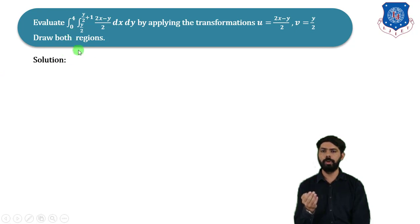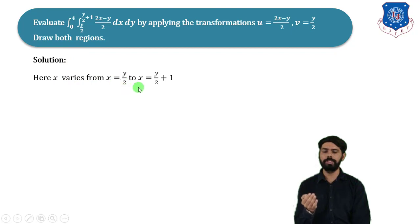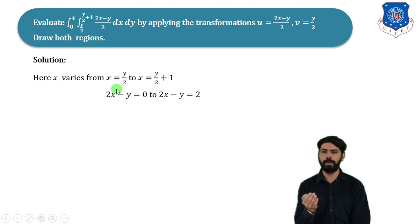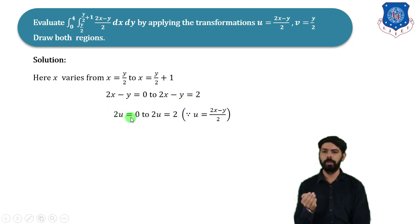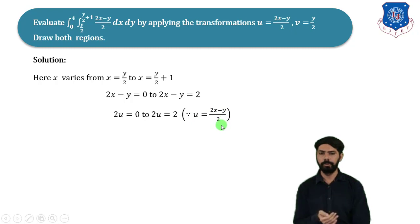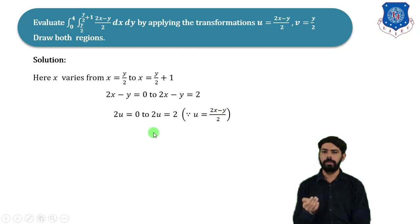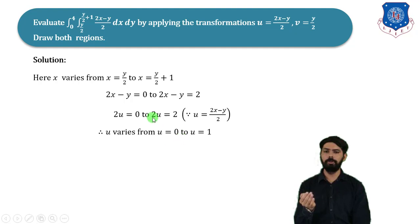Looking at the limits, x varies from x = y/2 to x = y/2 + 1. Simplifying, this gives 2x − y = 0 and 2x − y = 2, which means 2u = 0 and 2u = 2, since u = (2x − y)/2 implies 2x − y = 2u. Therefore, u varies from u = 0 to u = 1.